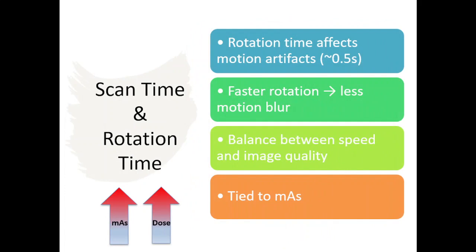Rotation time plays a crucial role in reducing motion artifacts. Faster rotation times minimize blurring in moving structures like the heart, but may require trade-offs in image quality. A diagnostic CT scanner typically completes one full rotation in 0.5 seconds, allowing for rapid imaging, and state-of-the-art CT scanners can capture the entire heart in a single heartbeat. Radiation oncology CT simulators often use a one-second rotation time, balancing image quality with dose considerations.